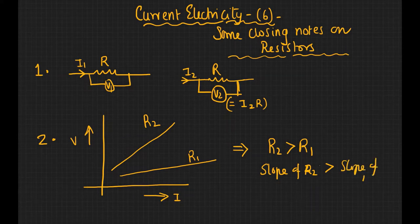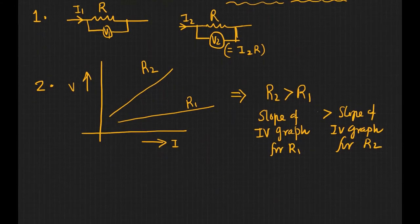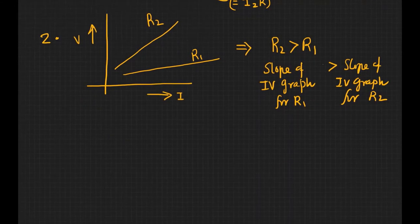...slope of R1. So it's not right to say slope of R1, you say slope of I-V graph for R1, similarly slope of I-V graph for R2. So if you have a graph like this, you know which one is a greater resistance.